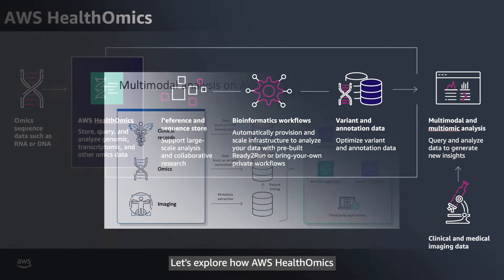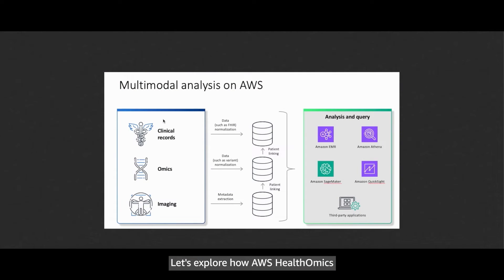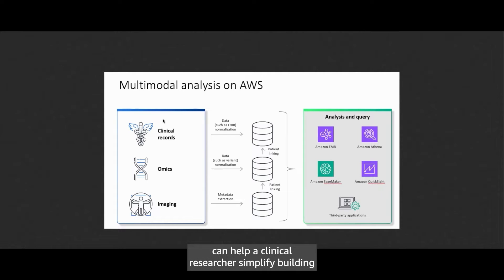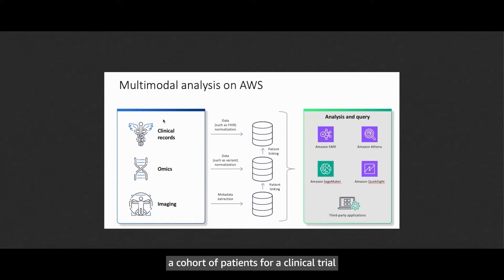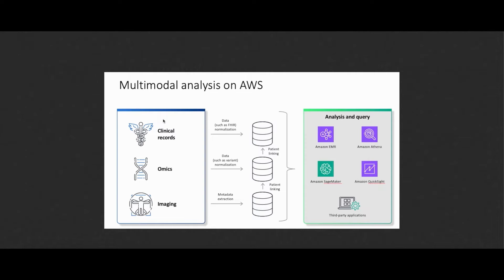Let's explore how AWS Health Omics and other purpose-built AWS services can help a clinical researcher simplify building a cohort of patients for a clinical trial based on genomic and clinical data.